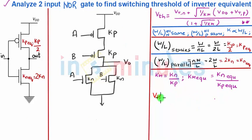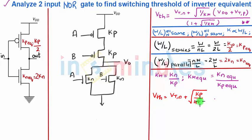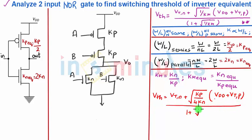So the switching threshold equals the threshold voltage of NMOS plus square root of (1/KR equivalent), where KR equivalent is 4KN/KP, into VDD plus VTP, upon 1 plus square root of KP/(4KN).